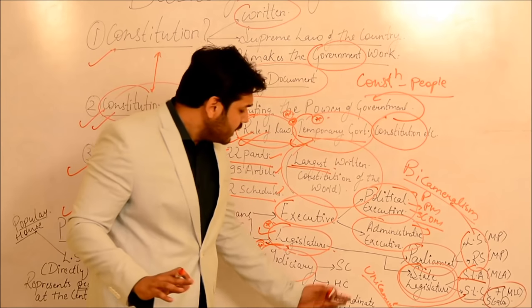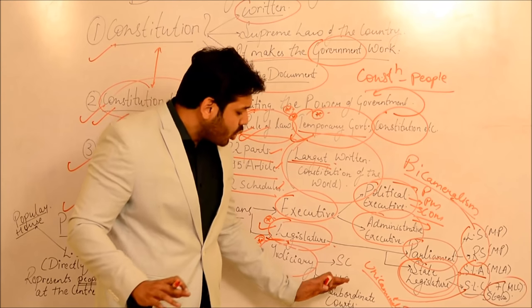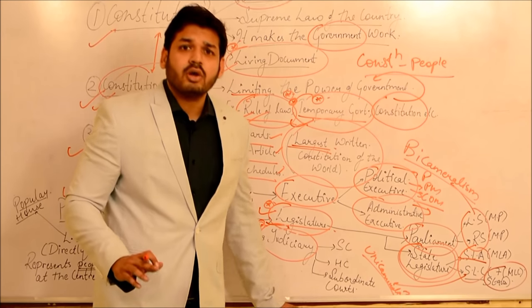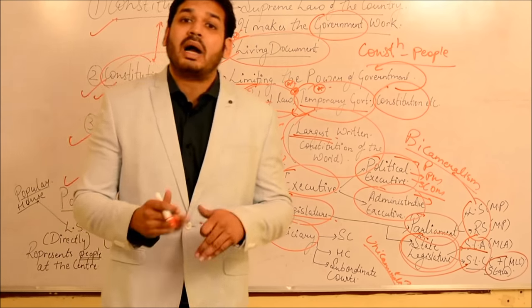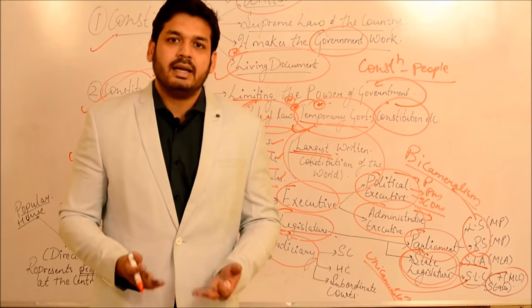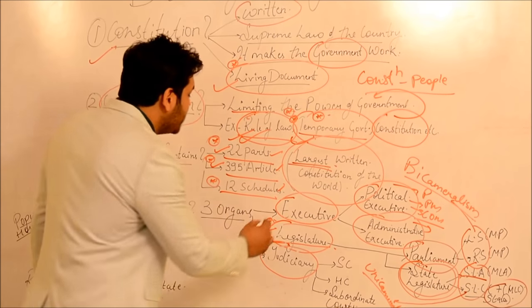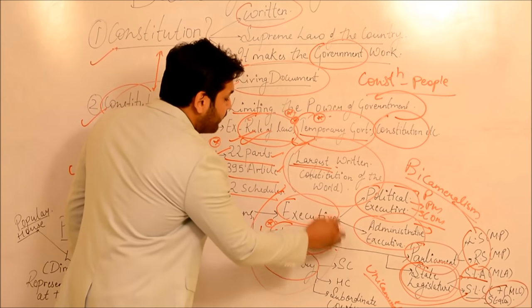We will deal with more important details ahead. For now, at the basic level, remember that Supreme Court, High Court, and Subordinate Courts all come under Judiciary - we will deal with these ahead. So these are the three organs of government.